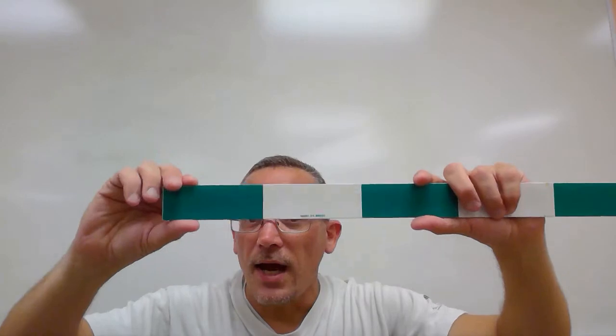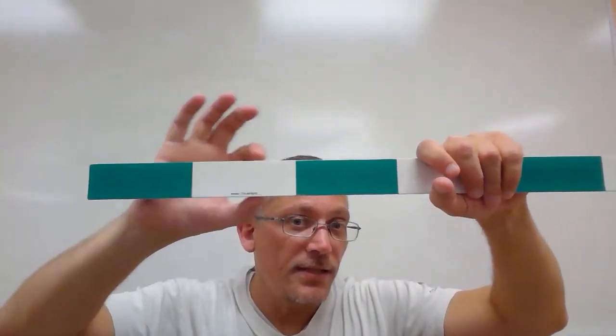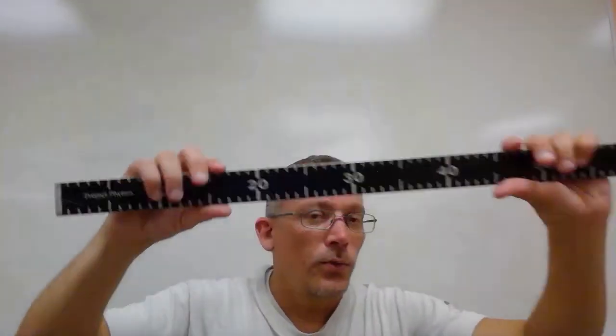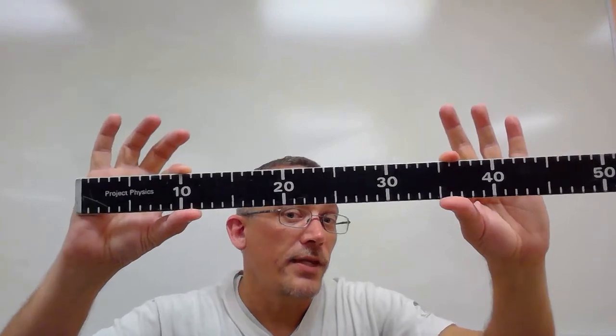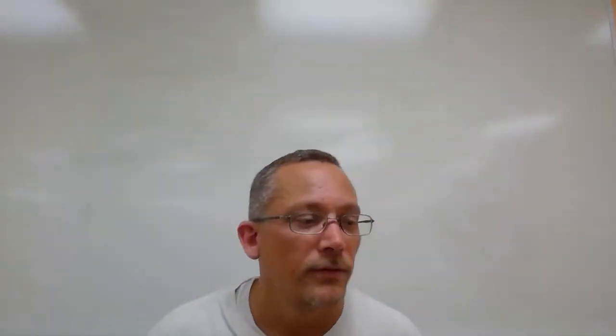With the first ruler I could estimate to the centimeter even though it only measures to the tens of centimeters. With the second I estimated to the tenth of a centimeter even though it only measures to the centimeter. And with the best ruler, I estimated to the hundredth — one more place than it actually measures. So given a measurement, can you tell which ruler was used?